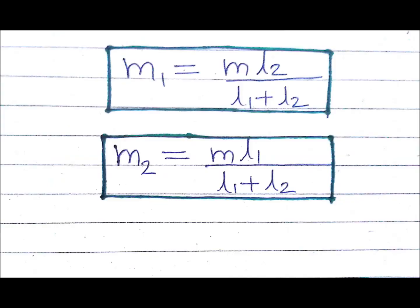From the first two conditions we can write: M1 equals M·L2 divided by (L1 plus L2), and M2 equals M·L1 divided by (L1 plus L2). Applying the lever rule: M1 equals total mass multiplied by the arm opposite to M1, which is L2, divided by the distance between M1 and M2, which is L1 plus L2. Similarly for M2.